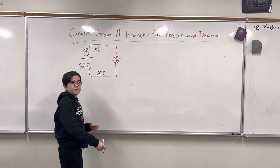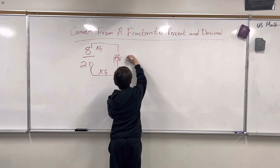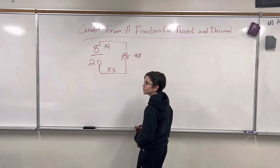So your equivalent fraction is now 40 over 100. Then we take the top, which is 40, and add a percent symbol. Now it is a percent. We've turned 8 over 20 into 40%.